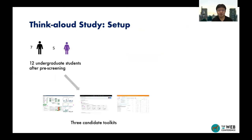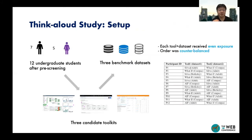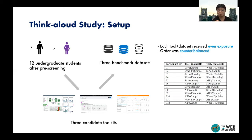Our study employed three public datasets: Adult Census Income, Berkeley Admission, and COMPAS Recidivism Risk Score, which span a breadth of complexities. These datasets have been widely studied by AI fairness researchers, so attribute sensitivities are available as ground truth. We first used a pre-screen to filter out participants with prior exposure to those datasets and tools. Each participant completed two tasks on two datasets using two different tools. We randomly assigned conditions across the twelve participants, so that each tool and dataset received even and counterbalanced exposure.